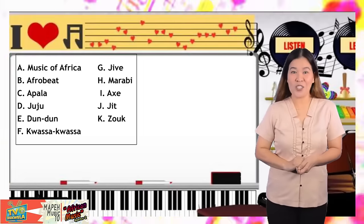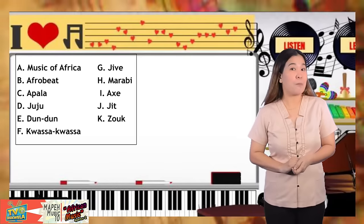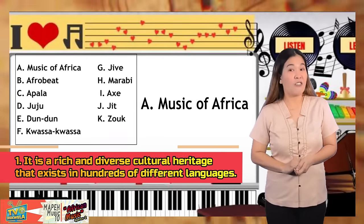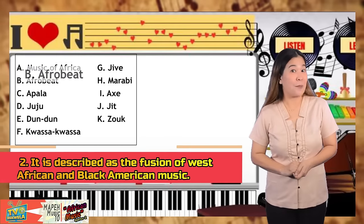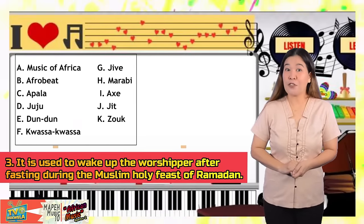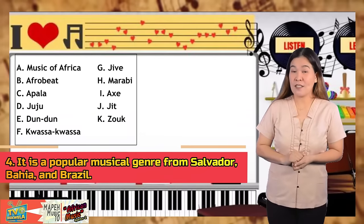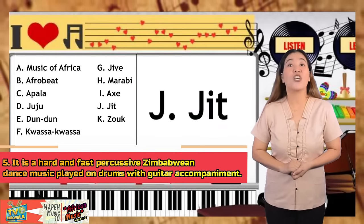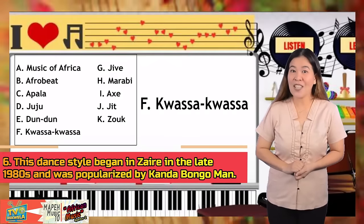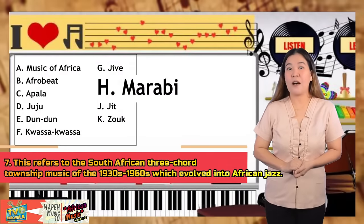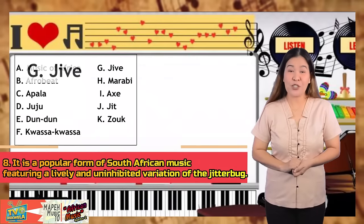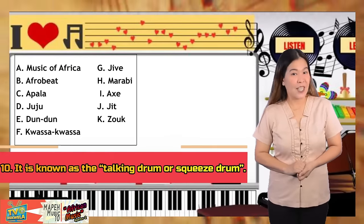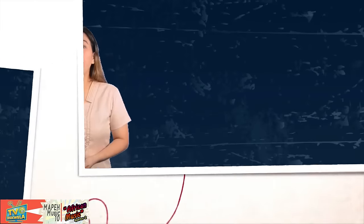Let us now check your answers. Please observe honesty while checking your own paper. For question number 1, the answer is Letter A, Music of Africa. Number 2, Letter B, Afrobeat. Number 3, C, Apala. Number 4, Letter I, Axe. Number 5, Letter J, Jit. Number 6, Letter F, Kwasa-Kwasa. Number 7, Letter H, Marabi. Number 8, Letter G, Jive. Number 9, Letter D, Juju. And number 10, Letter E, Dundon. Who got the perfect score? Congratulations!